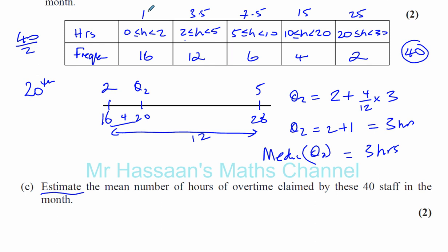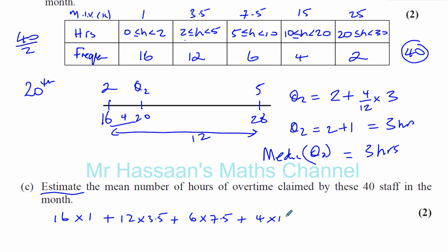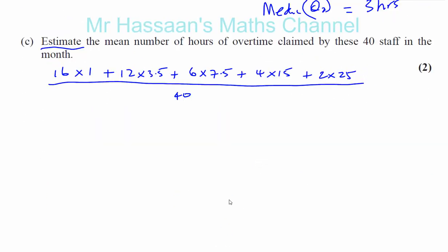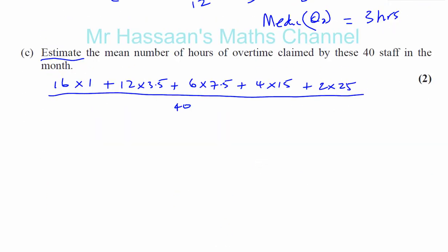What we do is multiply the mid-interval value x by the frequency, to give an estimate of the total number of hours of overtime claimed. So you have: 16 times 1, plus 12 times 3.5, plus 6 times 7.5, plus 4 times 15, plus 2 times 25. And that total is divided by the number of people in the frequency table, which is 40. That will give us an estimate of the mean number of hours of overtime claimed by these 40 staff.